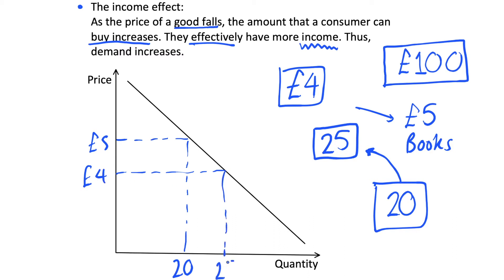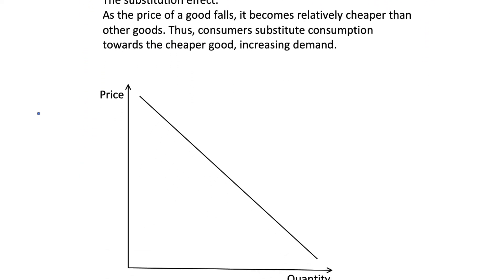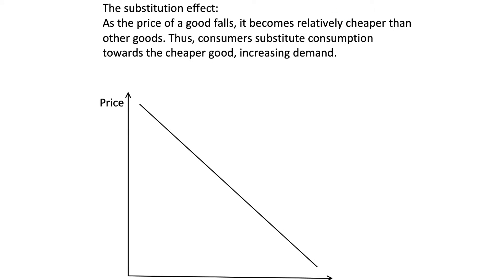We can illustrate this on a demand curve: if the price is five pounds we demand 20 books, but if the price falls to four pounds we demand a higher quantity of 25. This is why our demand curve is downward sloping — as we move down the demand curve and reduce the price, we increase our quantity demanded. We have a negative relationship between price and quantity demanded, so the demand curve, labelled D, is downward sloping. That's the income effect: as the price of a good falls, holding everything else constant, our real income effectively increases because we can buy more with the same income.